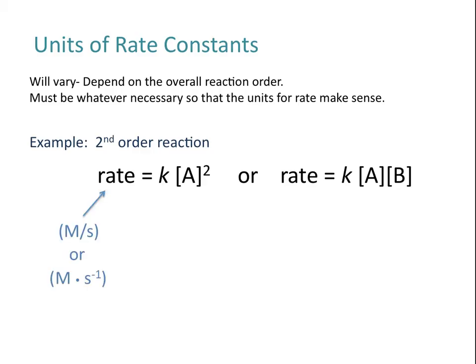It doesn't matter how you write it — a second order reaction is a second order reaction. Your rate is still going to be concentration divided by time, for example molar per second or molar times inverse seconds. Whether you have concentration of A squared or concentration of A times concentration of B, both give molar squared on the concentration side of the equation. So regardless of the specific form of your second order rate law, the units are going to be the same.